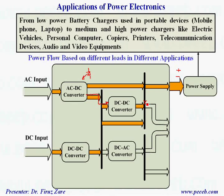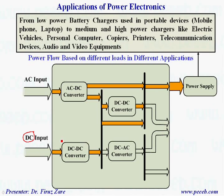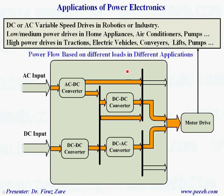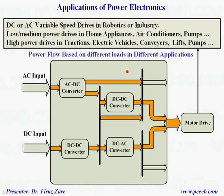Or if the input source is DC, we can actually control the output voltage through this converter and use that voltage for a power supply. Now let's concentrate on different applications — for example, DC or AC variable speed drives in robotics or industry. It can be low or medium power drives in home appliances like air conditioners, pumps, or high power drives in tractions, electric vehicles, conveyors, lifts, and so on.